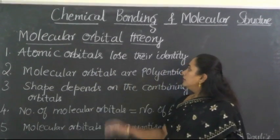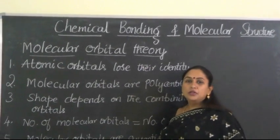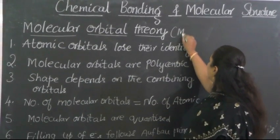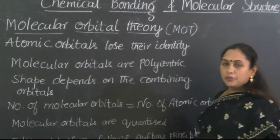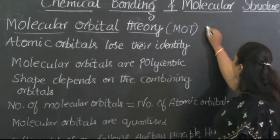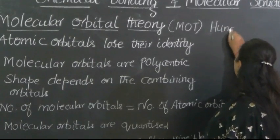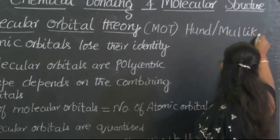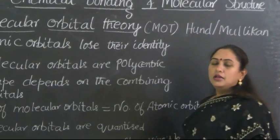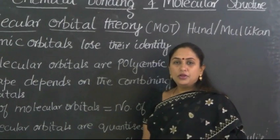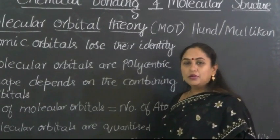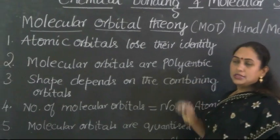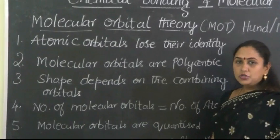Now let us understand the postulates of the molecular orbital theory, in short called as LCAO. The molecular orbital theory postulates were proposed by two important scientists, Hund and Mulliken. It is a great contribution given by these two scientists in order to understand about the formation of different types of molecules, which could not be explained by the concept of simple hybridization. Now let us get into the details of the postulates of this theory.